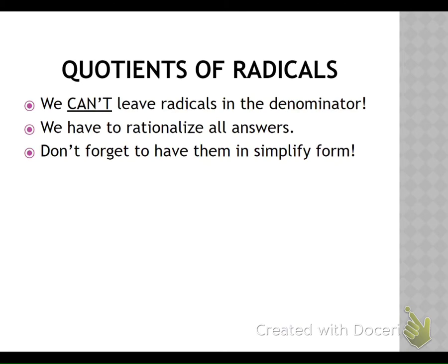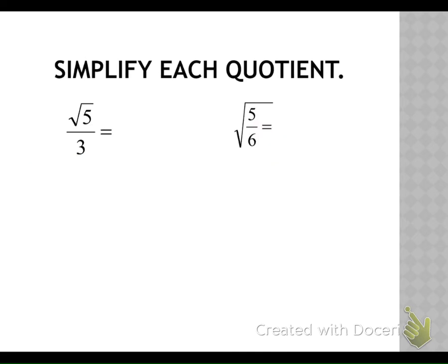Now we're moving on to quotients of radicals. A quotient — remember that's division. We can't leave radicals in the denominator, so if you have a square root in the denominator we're going to have to multiply to get rid of it. We call that rationalizing. After that, we have to put them in simplified form — factor trees, get them to lowest terms, figure out if there are any common factors. If there's no coefficient in our numerator and no radical in our denominator, nothing's changing. So square root of five over three just stays the same.